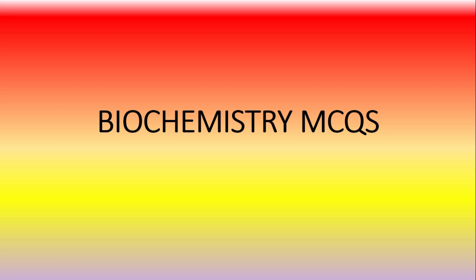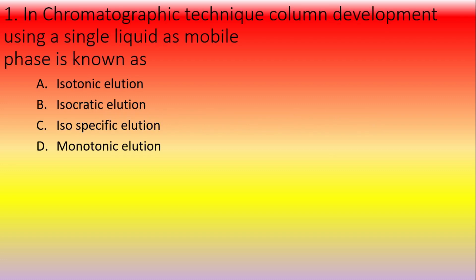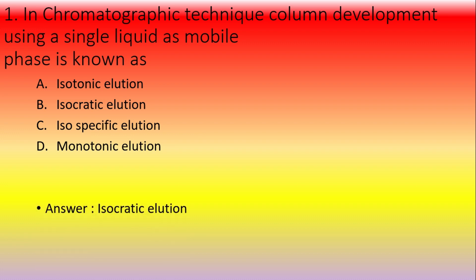The first question: in chromatographic technique, column development using a single liquid as mobile phase is used as — option A: isotonic solution elution, option B: isocratic elution, option C: isospecific elution, option D: monotonic elution. The answer is isocratic elution.